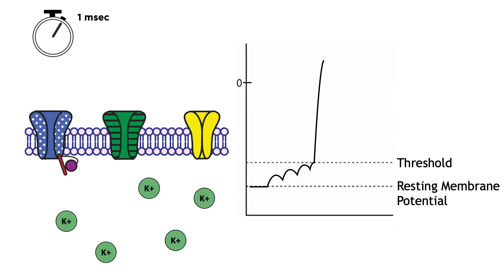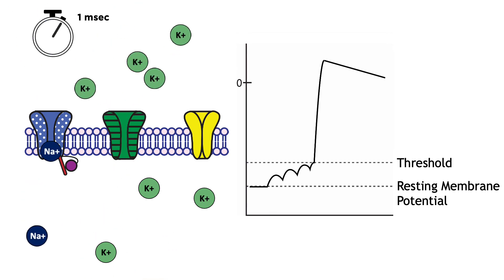Drugs and toxins can also affect neuron function by acting outside of the synapse. For example, some chemicals change voltage-gated ion channel dynamics. Veratridine, a compound found in plants from the Lily family, prevents voltage-gated sodium channels from inactivating. Initially, this causes an increase in neurotransmitter release, but it can quickly lead to excitotoxicity.